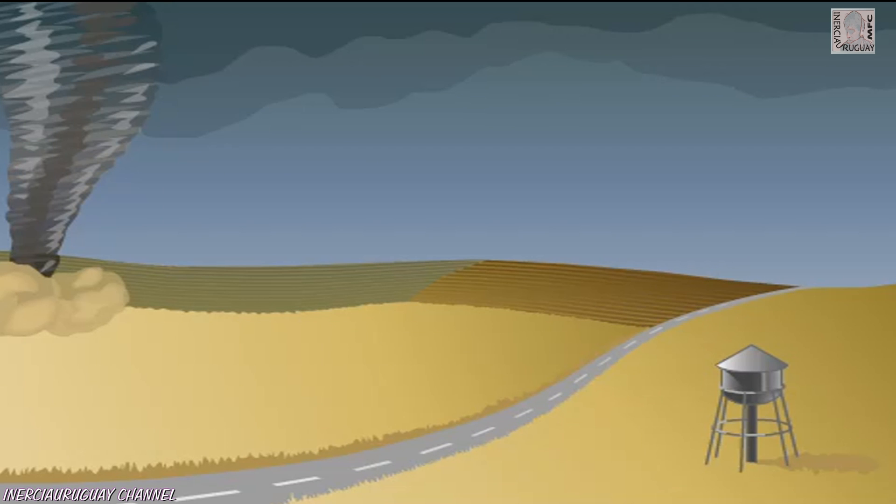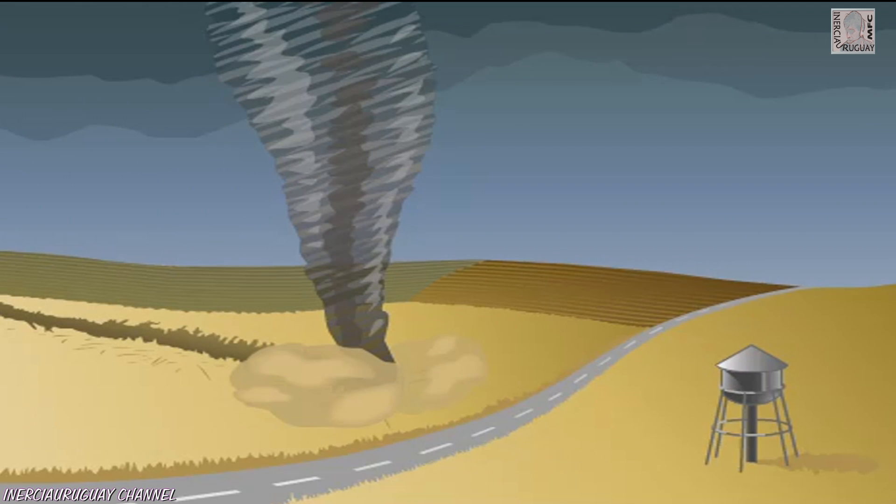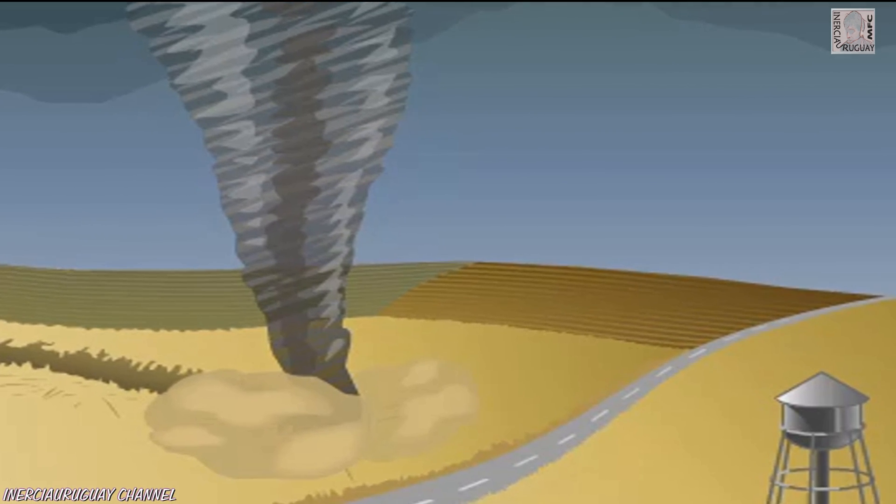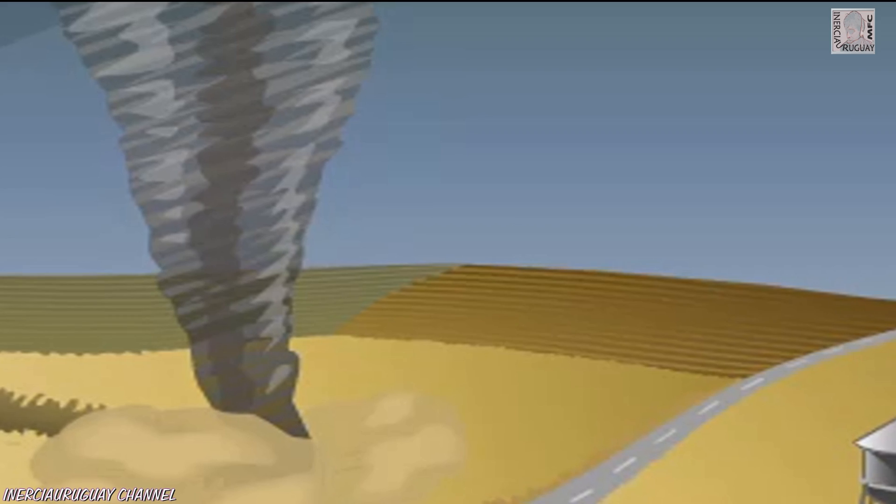Tornadoes can travel over distances ranging from short hops to many kilometers. They produce the most powerful winds on Earth, with some reaching speeds up to 800 kilometers per hour.